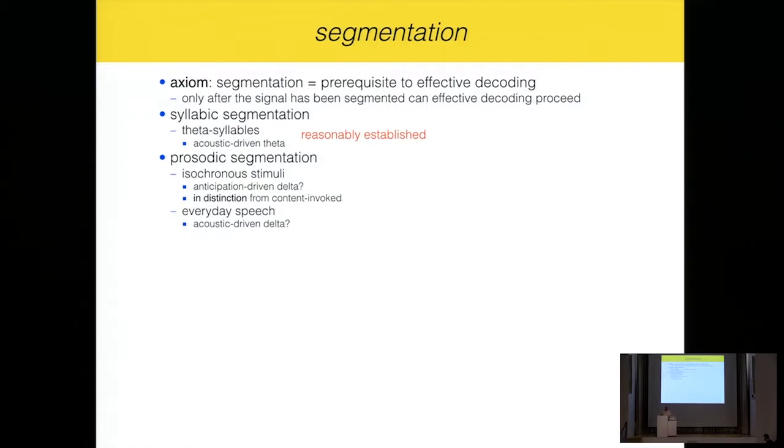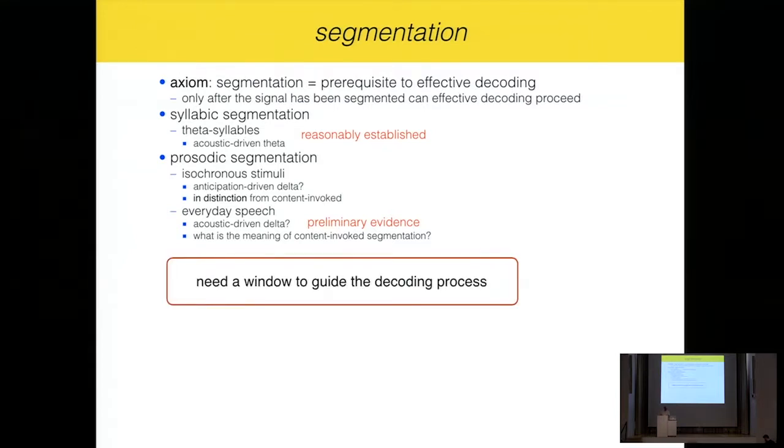And what we do when we talk about prosody, is to use, in our community, isochronous stimuli. And those create some oscillations that are in the delta domain. And I will talk about it a little more. And those, I would argue, are anticipation-driven, and are not at all content-driven. We can talk about acoustic-driven delta. And those, I think, are more appropriate for everyday speech. And here I will talk a little bit about some preliminary evidence that I gathered on that, psychophysically. And in the context of everyday speech, I think we should ask ourselves, what does it mean, content-invoked segmentation?